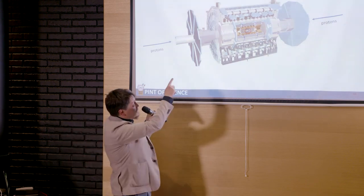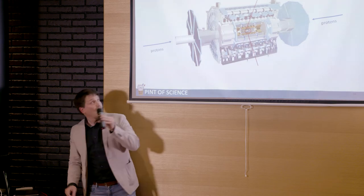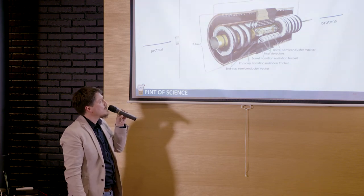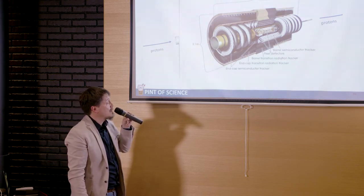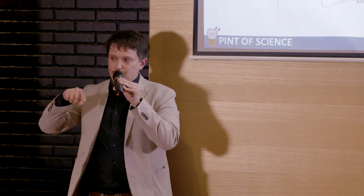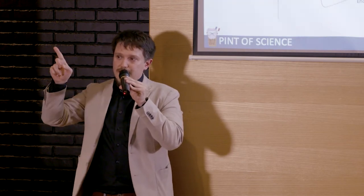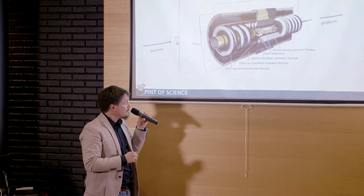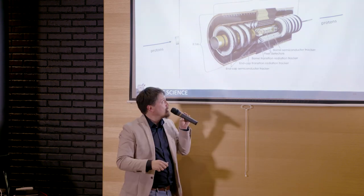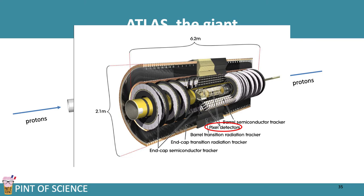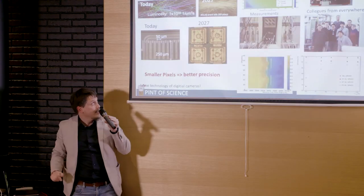At the core of ATLAS there is a tracking detector used to measure the trajectory of charged particles. The detector is immersed in a magnetic field oriented along the beam axis, so charged particles don't go straight but make circles — from those circles we can measure their momentum. At the very core is the pixel detector, which is what I work on.